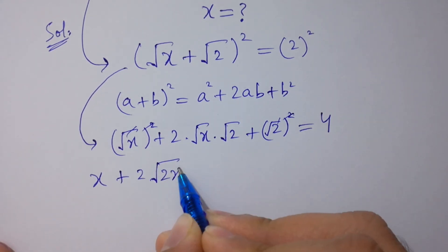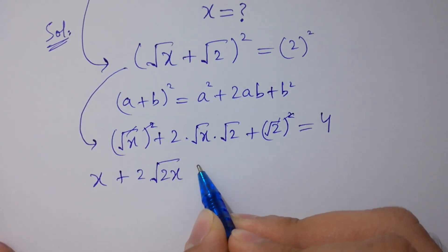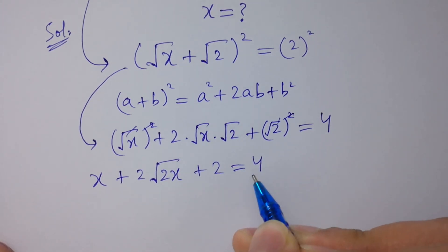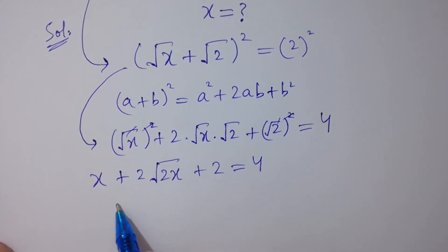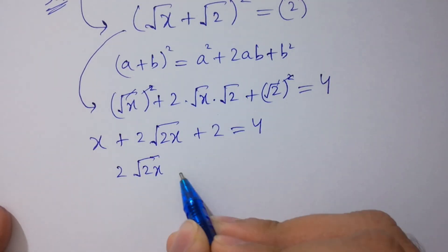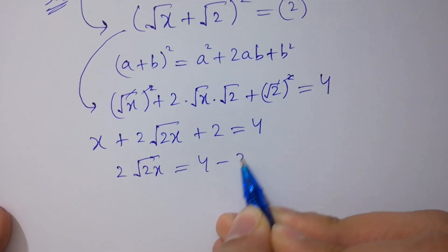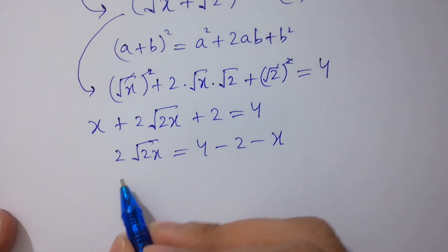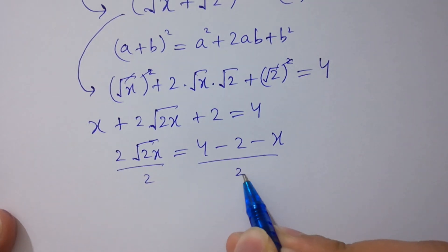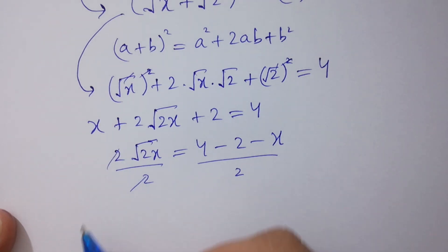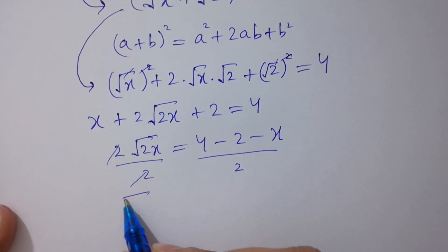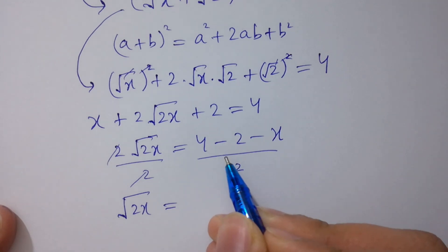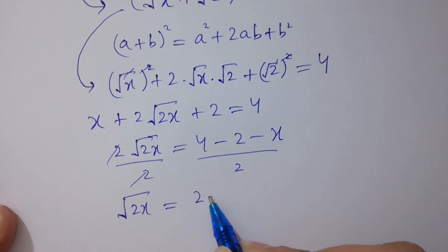We get x plus 2 times square root of 2x plus 2 equals 4. Subtract 2 from both sides: 2 times square root of 2x equals 4 minus 2 minus x, then divide both sides by 2. The 2s cancel, giving square root of 2x equals 2 minus x over 2.